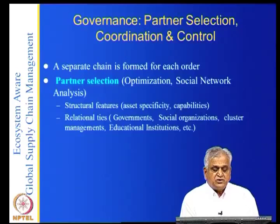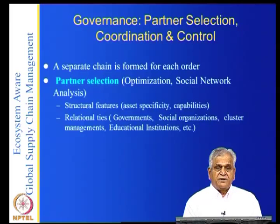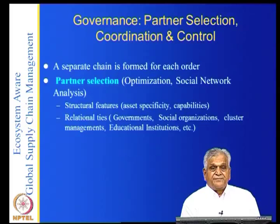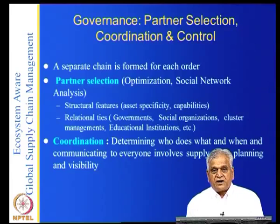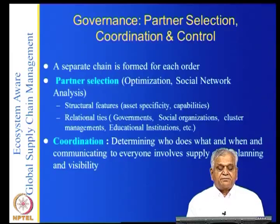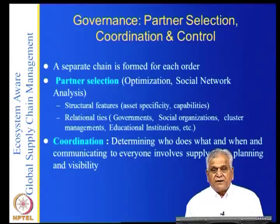Check whether your supplier has the structural features, the knowledge for manufacturing the product, and also the social capital. Then try to select your partner. Once you select the partner, determining who does what and when, and communicating to everyone, involves supply chain planning and visibility. Once your product and supplier capabilities are known, you use ERP systems and supply chain planning software from SAP, Oracle, and others. Supply chain visibility is also possible using sensor networks and RFID tags.